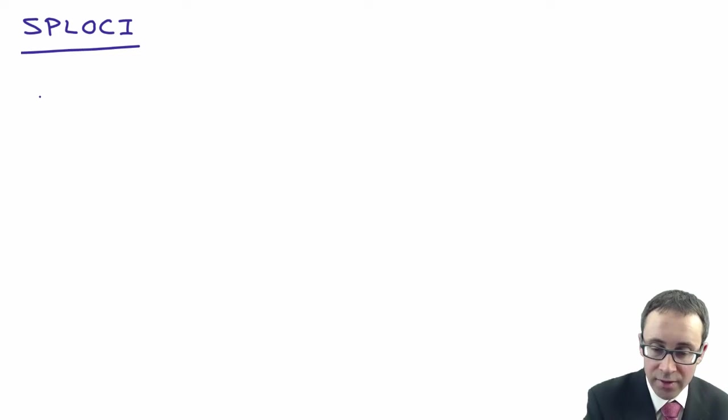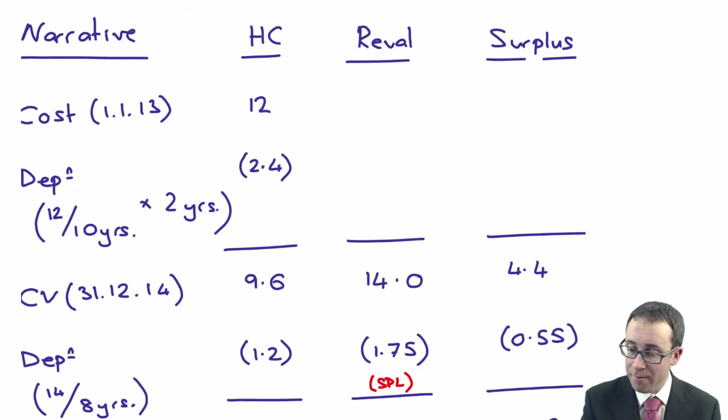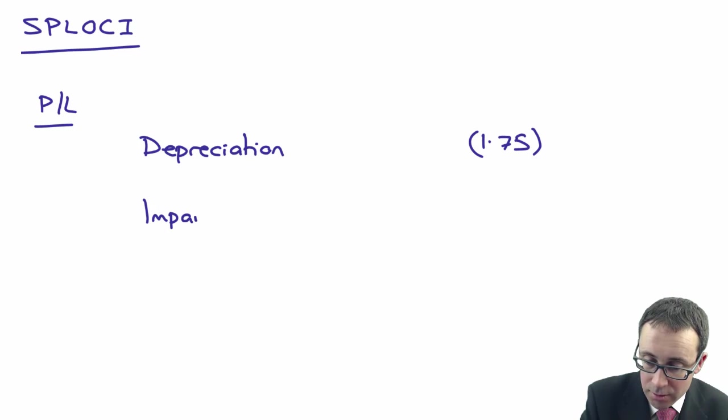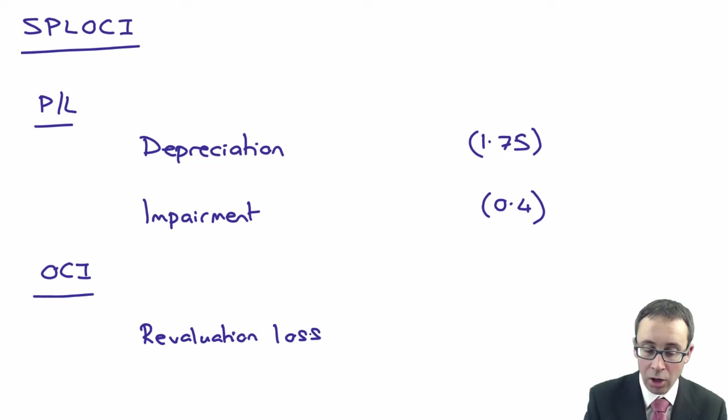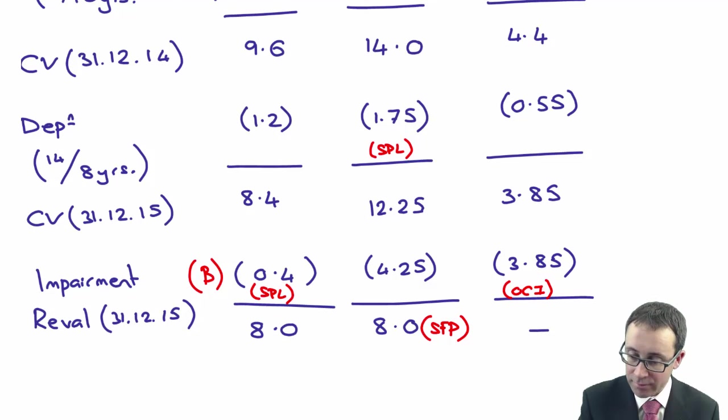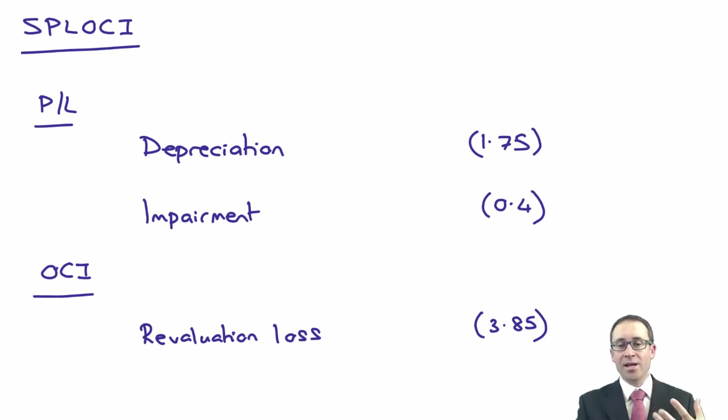The statement of profit or loss and other comprehensive income. In profit or loss, don't forget we have your depreciation. The depreciation for the year was 1.75 million. We also have the impairment at 0.4 million. Then in your other comprehensive income, you have your revaluation loss at 3.85. That 3.85 goes through OCI because that's where the previous gain was held, and that's where it would be taken to.